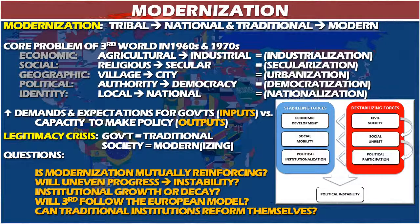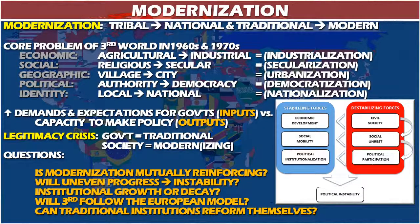When civil society outpaces economic development, this leads to social unrest — people have demands that are not being met by economic growth. These demands can be addressed if there's social mobility, meaning people can advance themselves. However, if social unrest outpaces social mobility, people will enter the political arena — forming parties and interest groups — to put those demands on the political system. The question is whether the political system has the institutional capacity to deal with this growth in political participation. If it can't, the result is political instability.